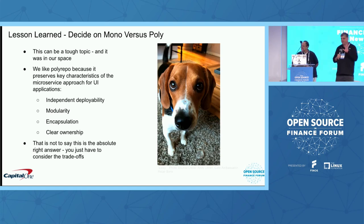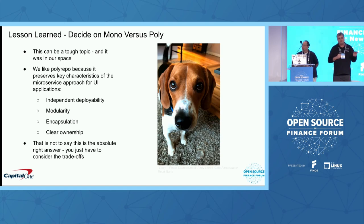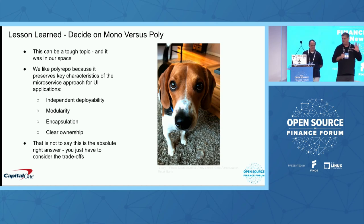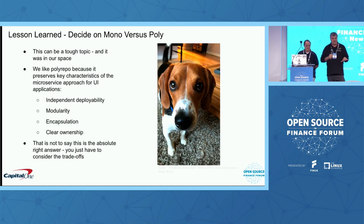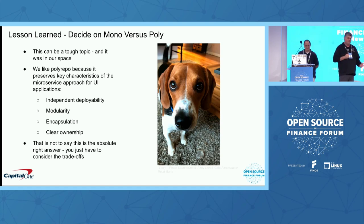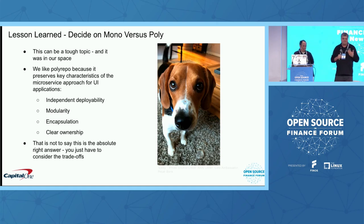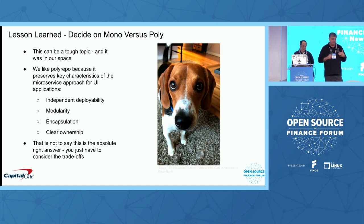Probably the most controversial thing — and we get these questions all the time — is deciding on a monorepo versus a polyrepo type of structure. I think we had 60,000 meetings on why we would choose one over the other — knock-down, drag-out meetings. We finally settled on polyrepo. Unfortunately, it comes down to Conway's Law in that people wanted to retain ownership of the code their teams are producing. It did actually fit better into the structure of the application in general, in that it allowed us to have independent deployability — you knew what you're deploying.